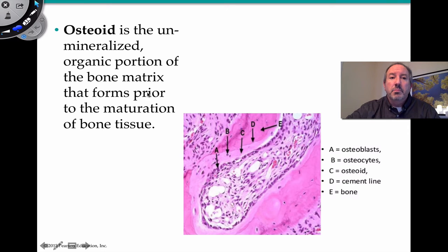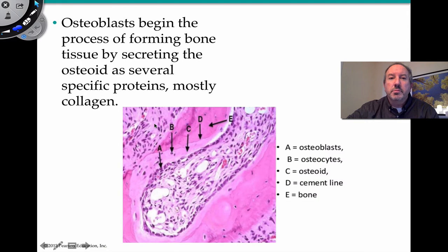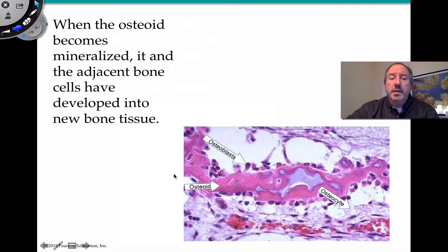The osteoblasts are the bone builders. The first thing they do is put down a tissue called osteoid — the unmineralized portion of the bone matrix, which is mostly collagen. Then the osteoblasts begin forming bone tissue by secreting osteoid and several specific proteins, including collagen. Ultimately, the osteoid will become mineralized — meaning calcium will start to be deposited in the osteoid — and it'll develop into mature matrix bone tissue.